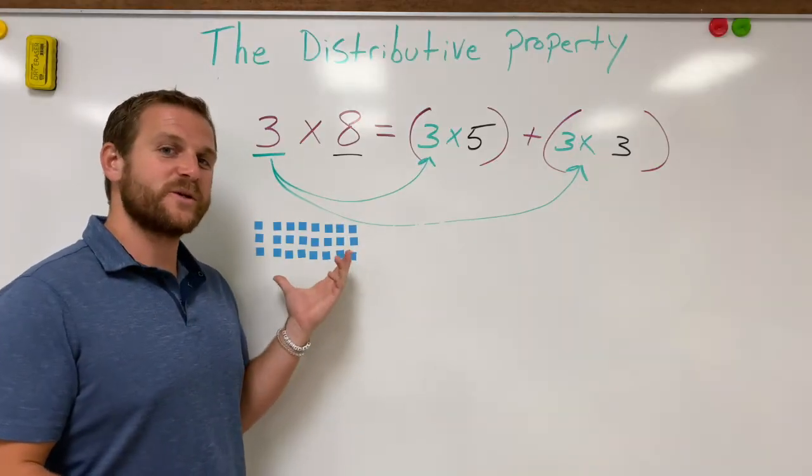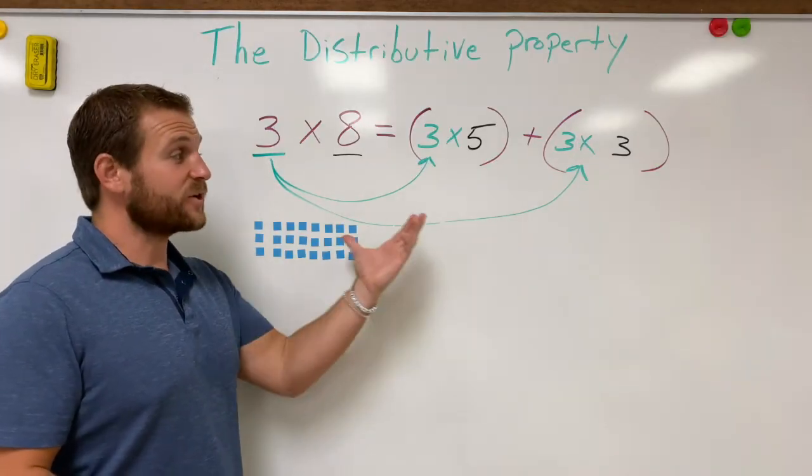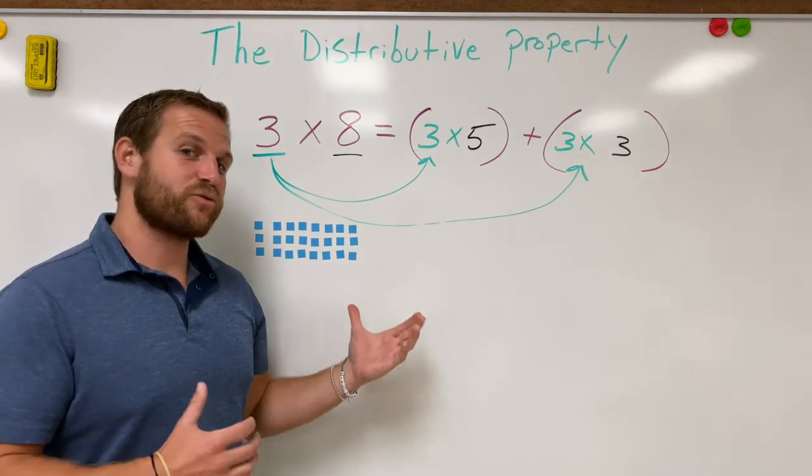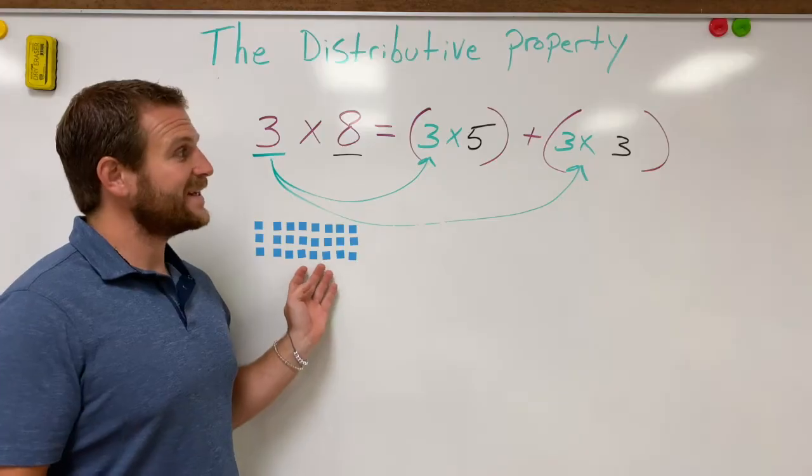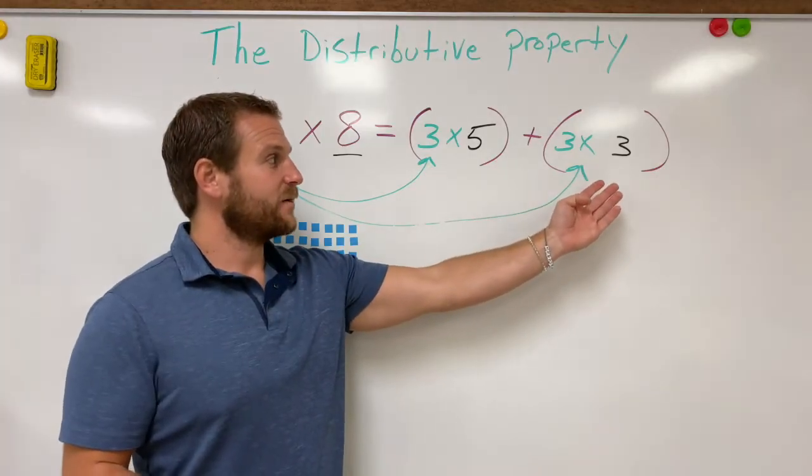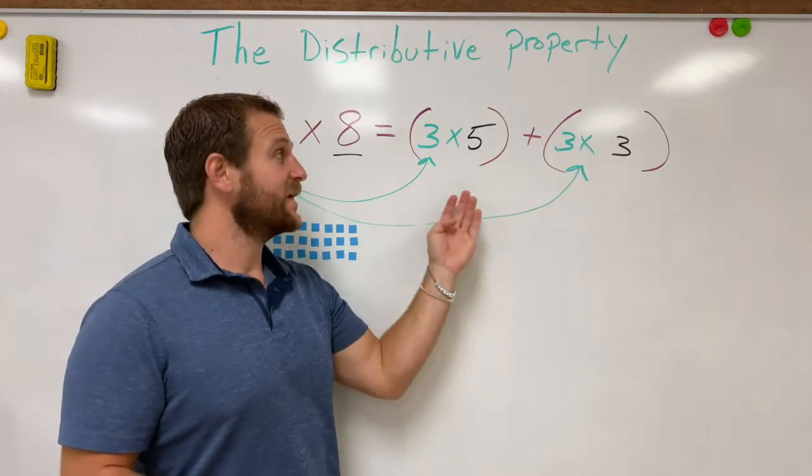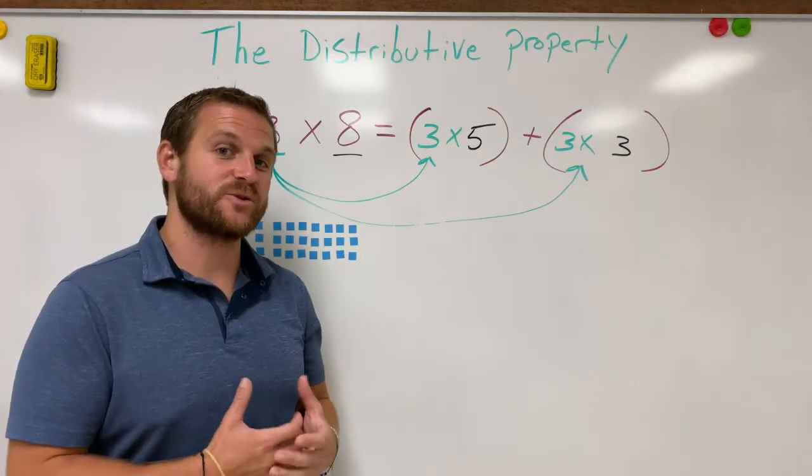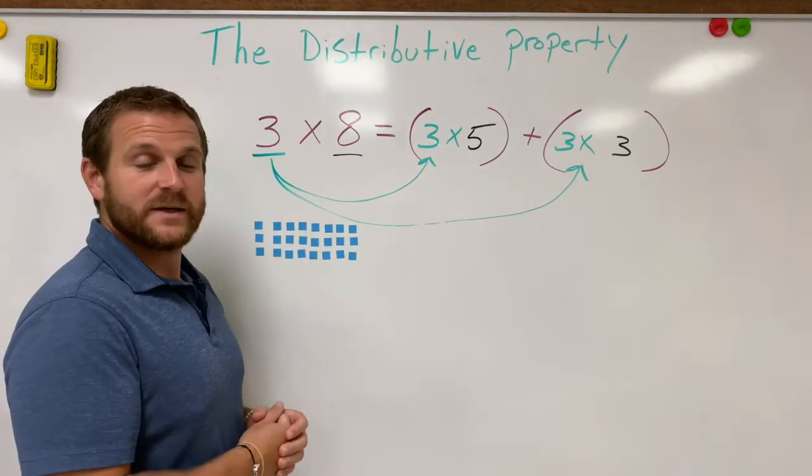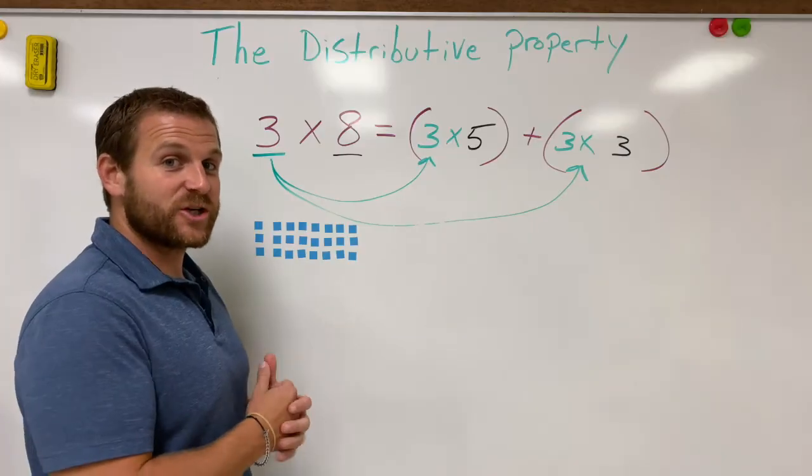So what we have here is an array of three times eight. Now, if our distributive property works properly, then we should be able to distribute this three times eight equally into an array for three times three and an array for three times five. And we should still be able to keep the same number of unit cubes or the same product in the end. If I count these up right now, I should have 24.